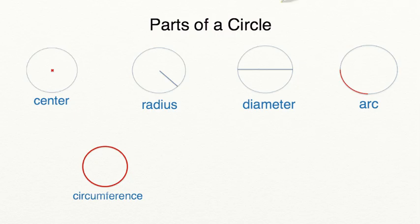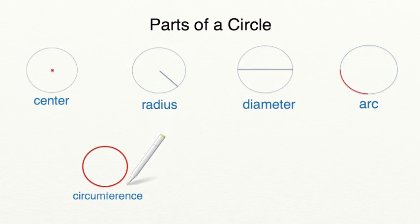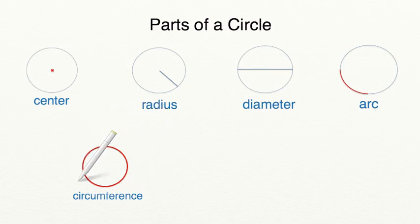Similar to the arc, the circumference also goes around the edge of the circle. However, it's different because the circumference measures the entire distance around the full edge of the circle.